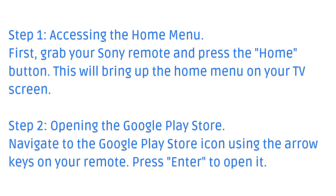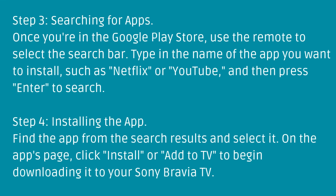Press Enter to open the Google Play Store. Step 3: Searching for apps. Once you're in the Google Play Store, use the remote to select the search bar and type in the name of the app you want to install.